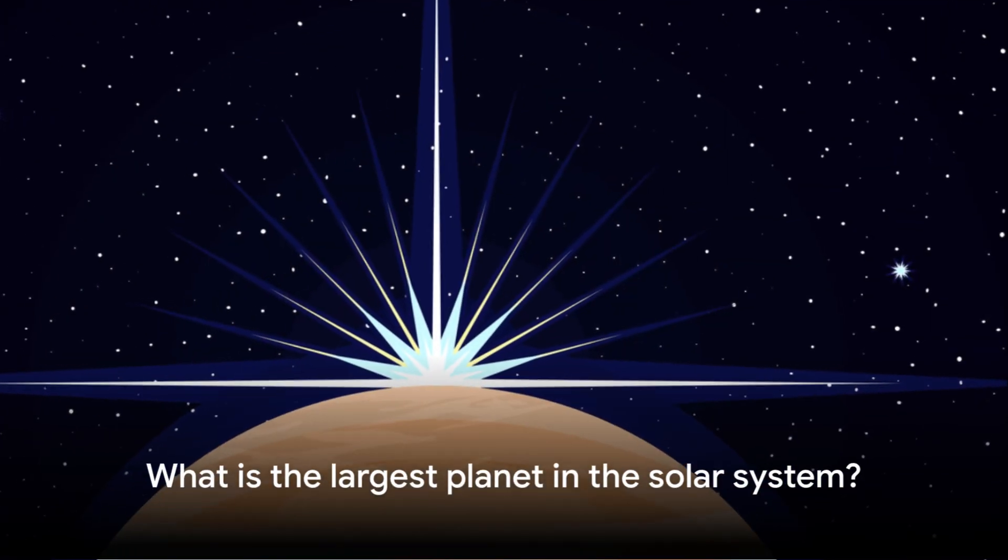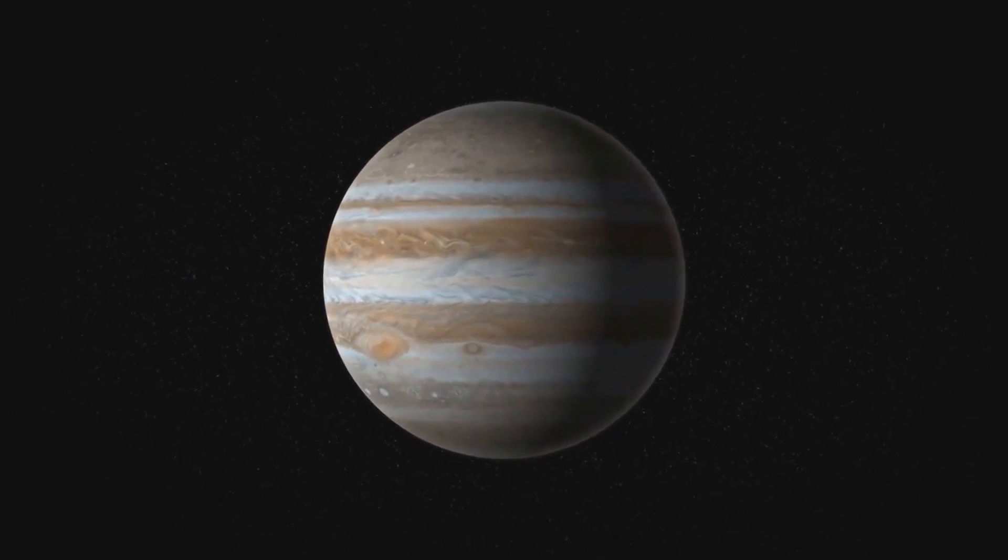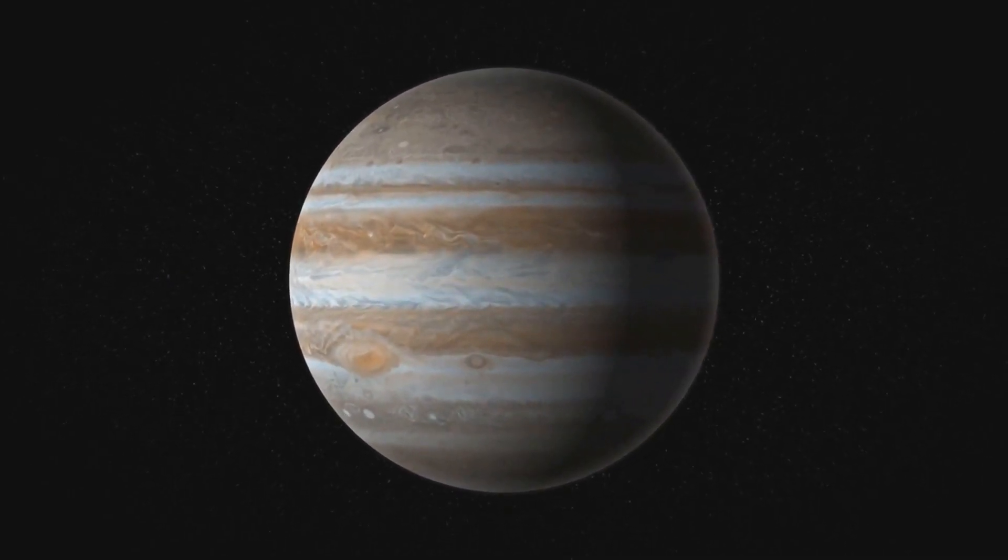Jupiter is the largest planet in the solar system. It is more than 11 times the diameter of Earth and has a mass more than 300 times that of Earth.